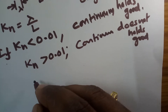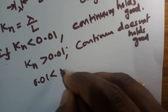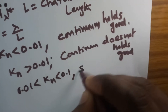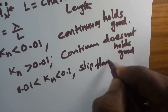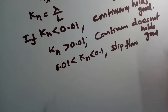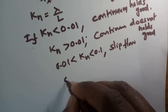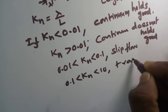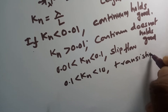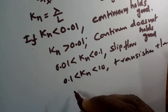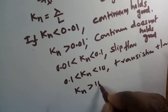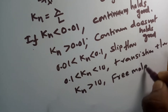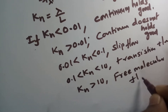If Kn is in between 0.01 and 0.1, then the flow is called slip flow. If the Knudsen number is in between 0.1 and 10, then the flow is called transition flow. If Kn is greater than 10, then that is called free molecular flow.